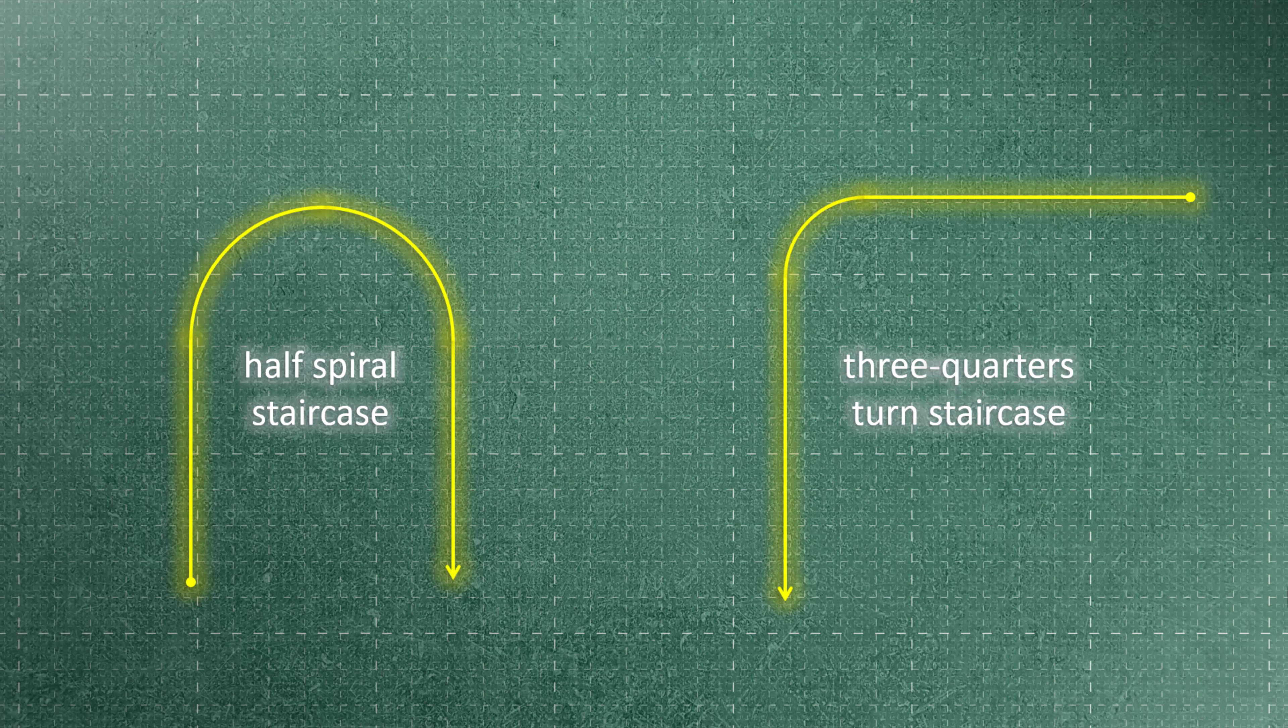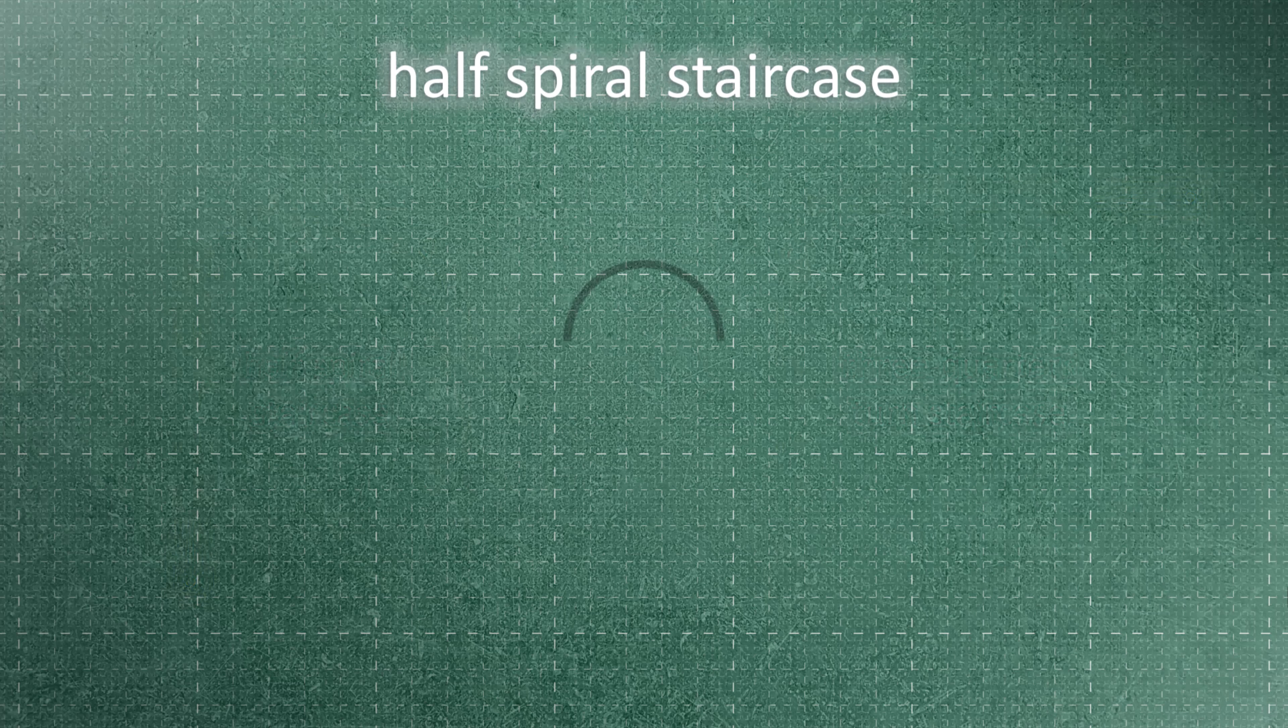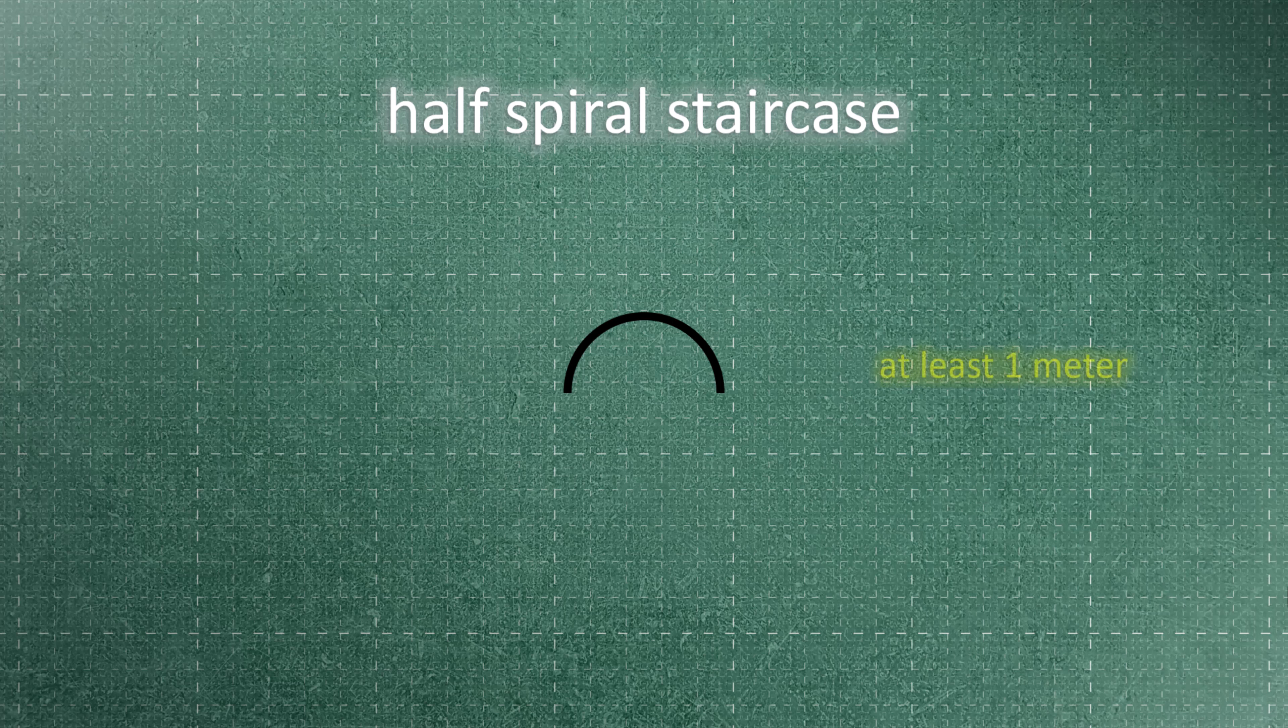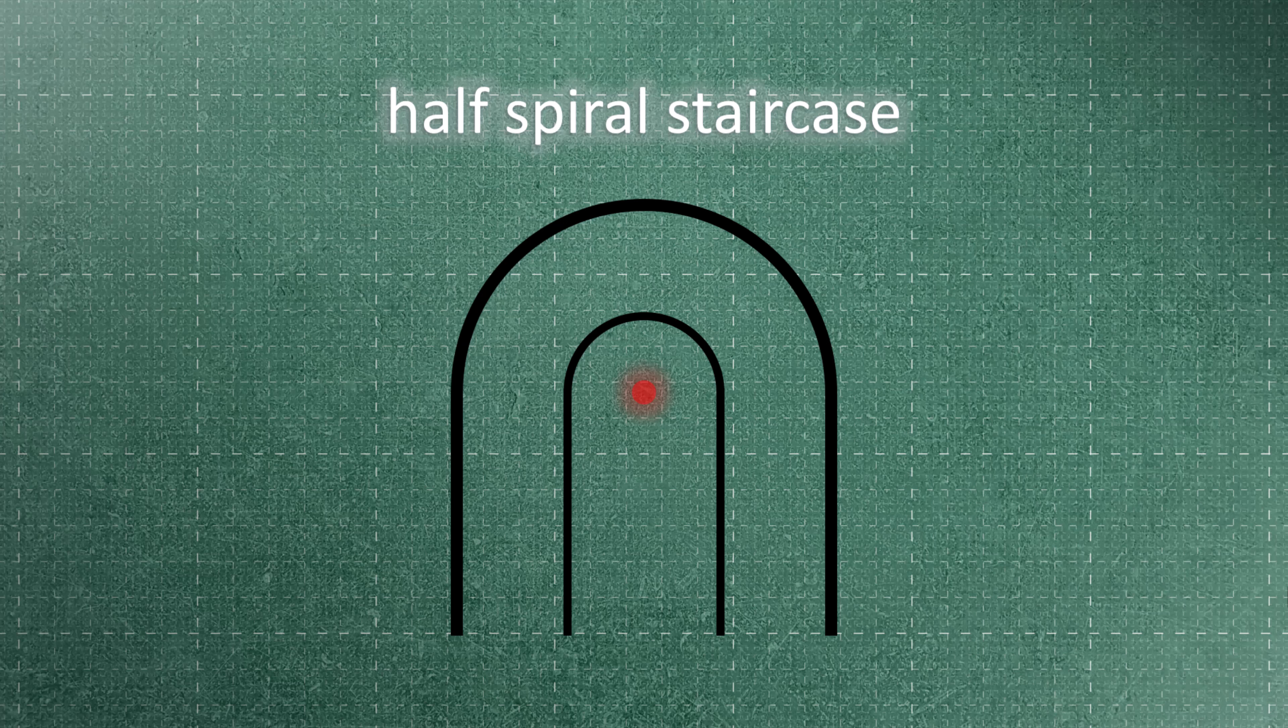To draw a half spiral staircase, start by drawing a half circle with a diameter of at least one meter. Continue the outline of the half circle. Offset the entire drawing by a desired width. Find the center of the half circle and draw the path line of the staircase. Mark the path every 30 centimeters and connect the points after the curve to the center of the half circle.